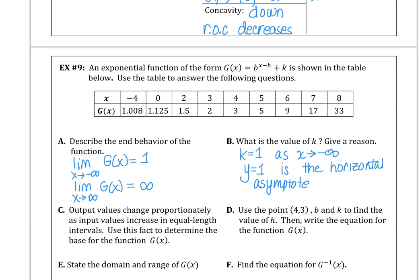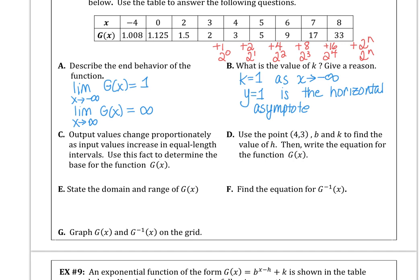The output values change proportionally. So let's think about that. We could figure out the base. So here I'm adding 1 to 2 to get to 3. And then I add 2 plus 3 to get to 5. And 4 plus 5 gives me 9. And 8 plus 9 is 17. And 16 plus 17 is 33. So do you see we're using powers of 2? This is 2 to the 0, 2 to the 1, 2 squared, 2 cubed, 2 to the 4th, and then 2 to the nth, so on. So our base is 2.